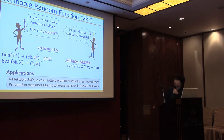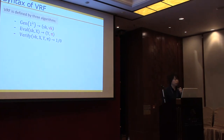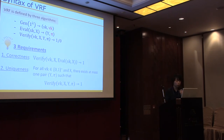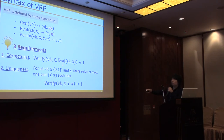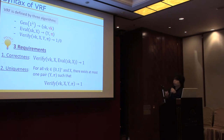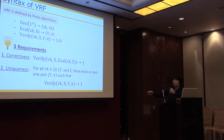VRFs have various applications. The syntax is very simple — basically like a PRF but with an additional verification key, a proof pi, and a new verify algorithm. We have three requirements. The first is obvious correctness: if you evaluate on input x, it should verify. The second is uniqueness, which makes VRFs really interesting and difficult to construct. Uniqueness states that for all verification keys and input x, there can exist at most one pair of y and proof pi that the verify algorithm will output one for.